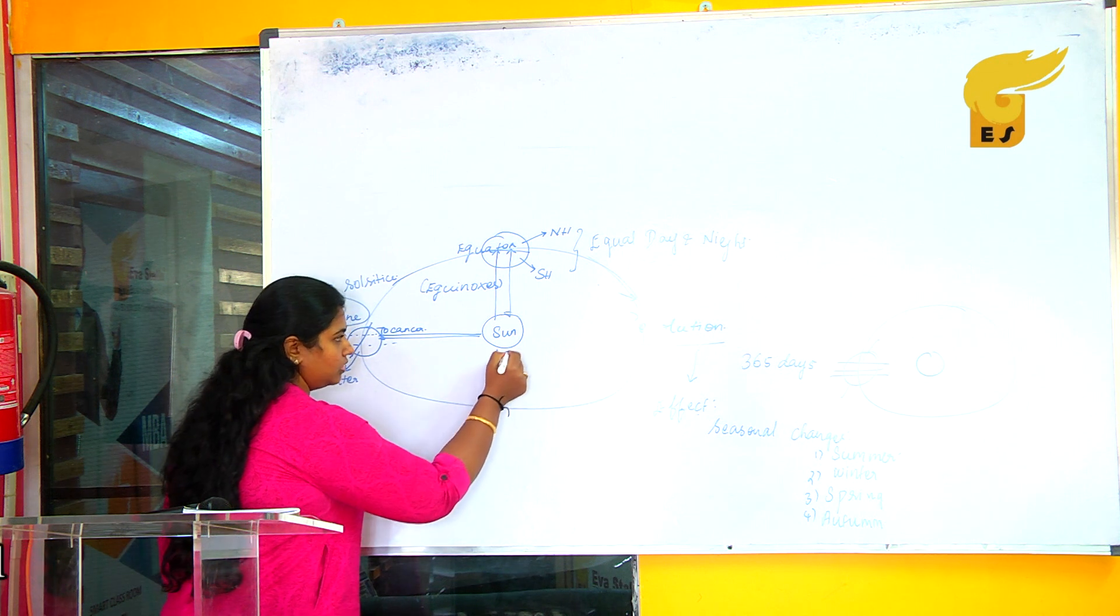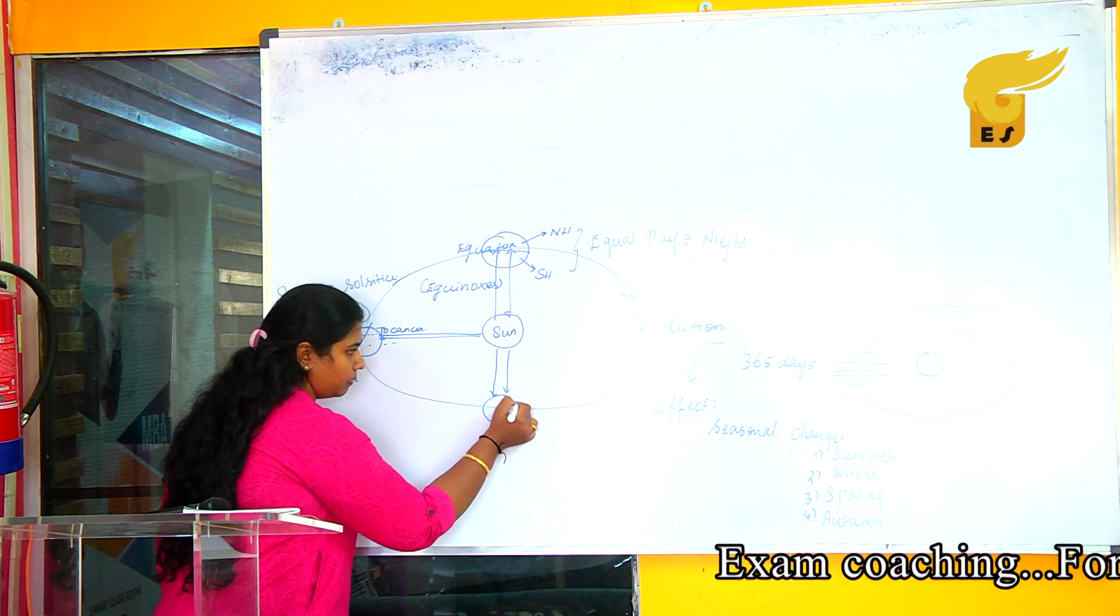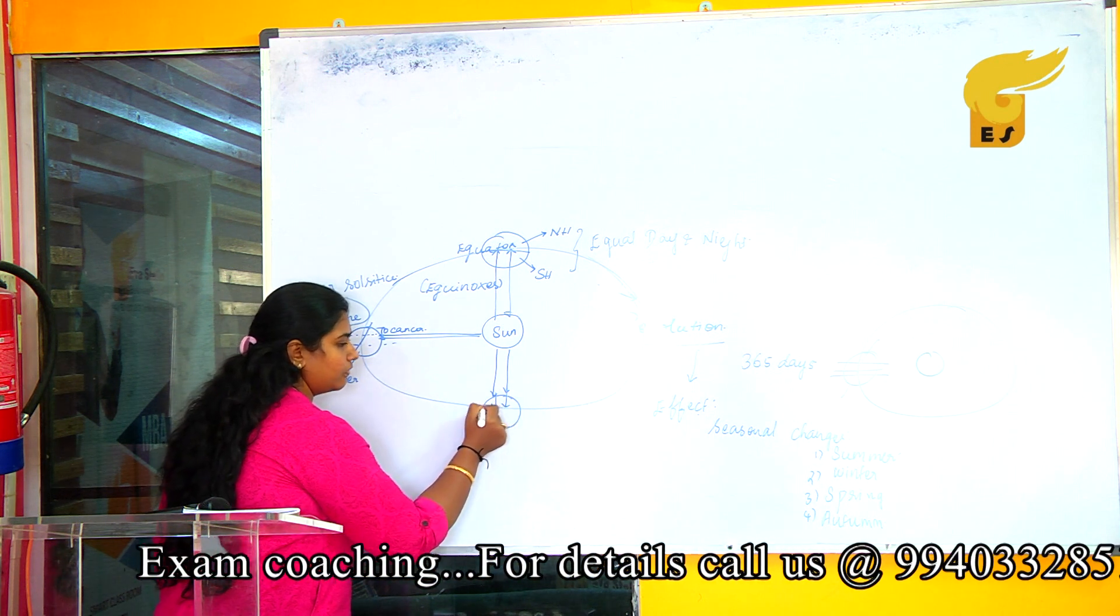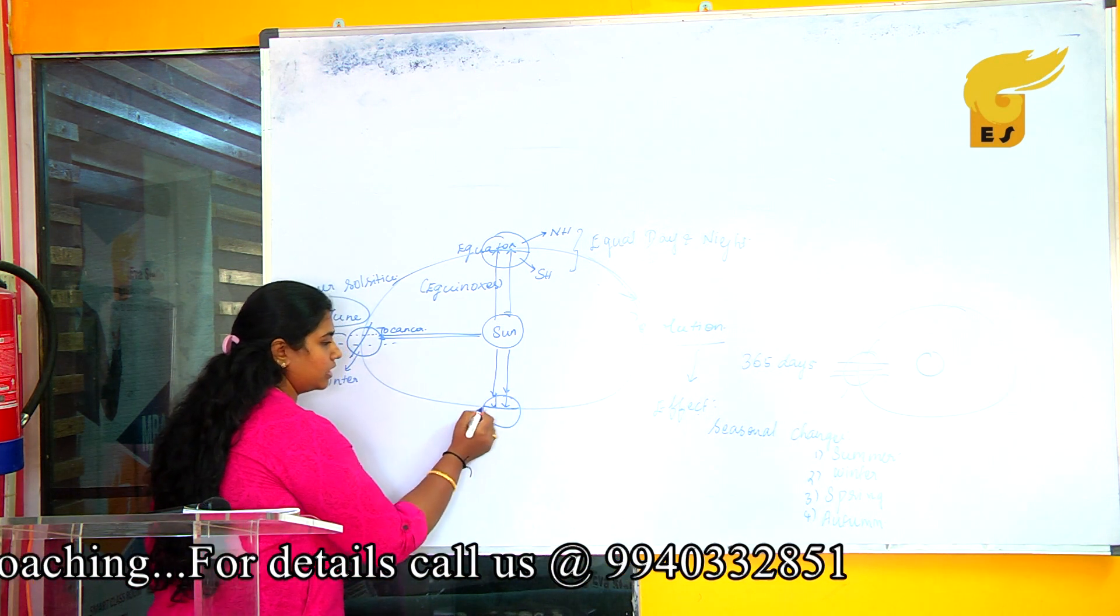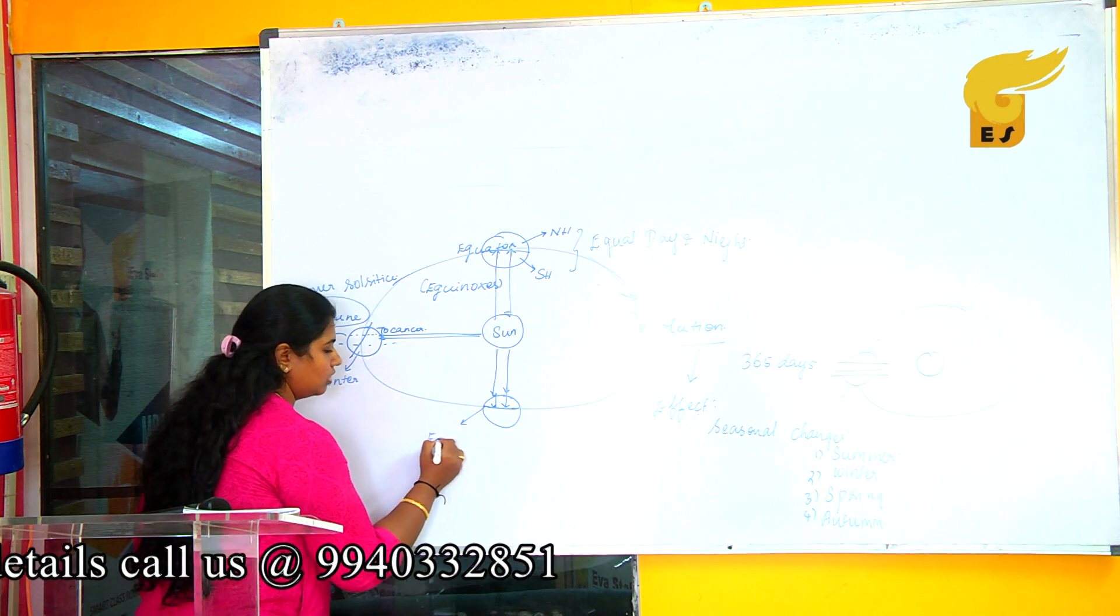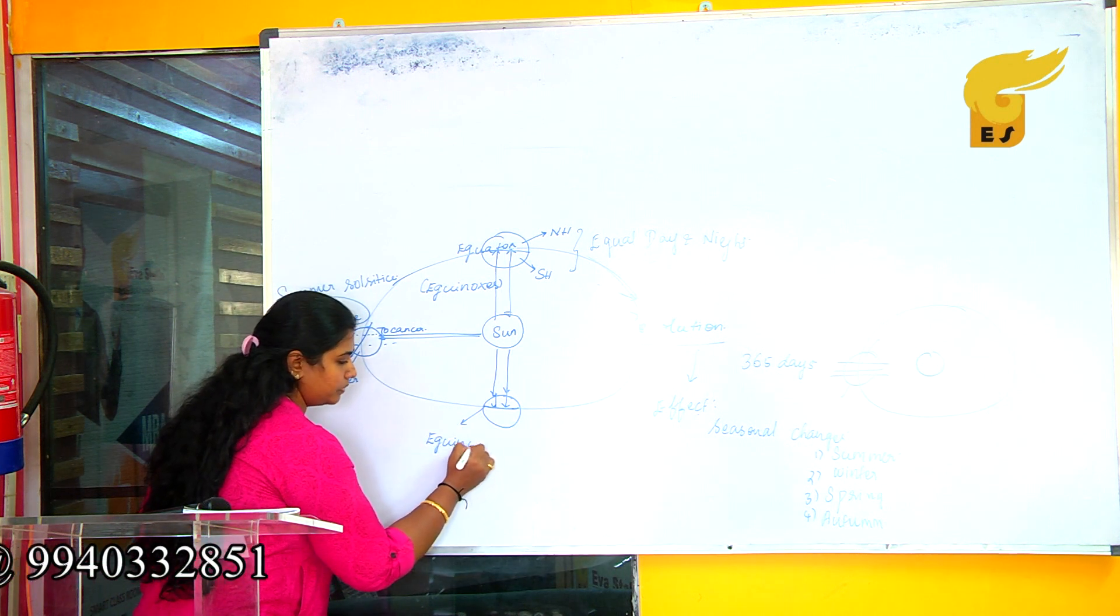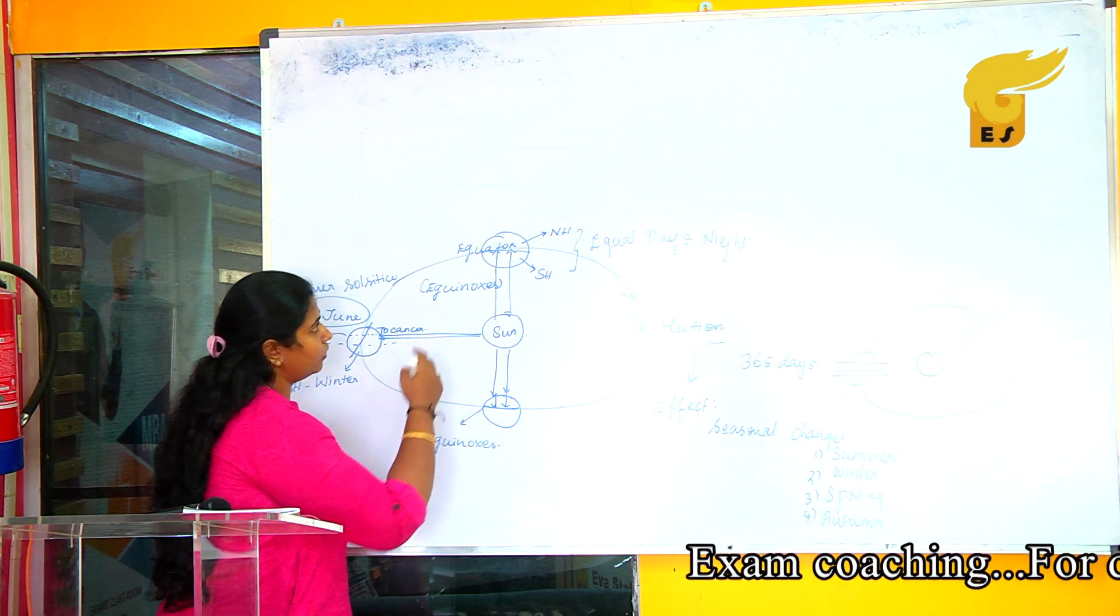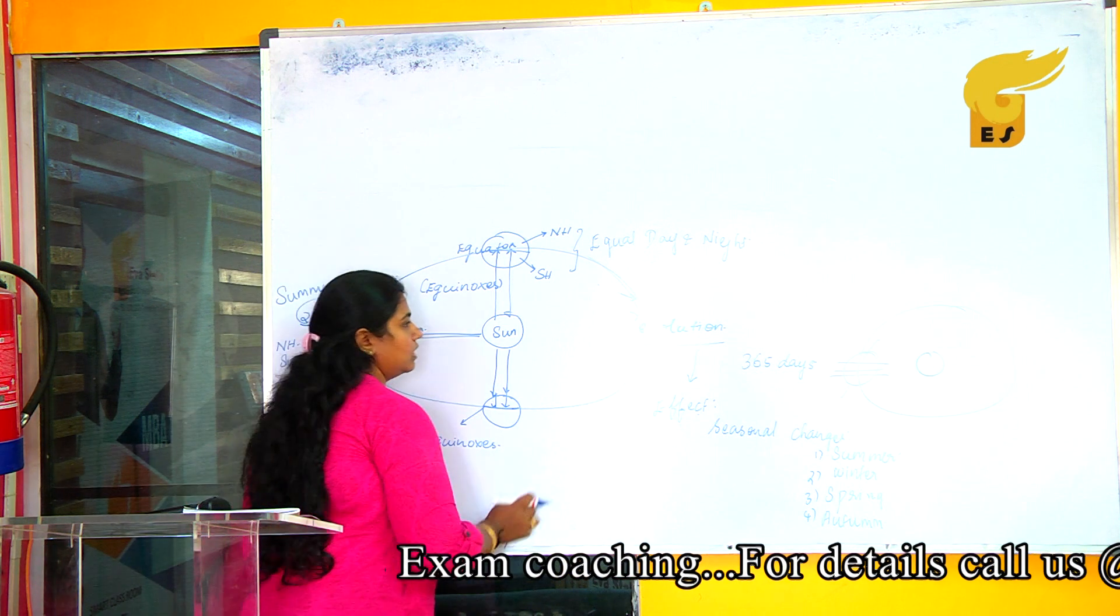Further on, when Earth is revolving, the Sun rays will again fall on the equator. A similar situation, equinoxis will happen. Again, equal day and night for both Northern and Southern Hemisphere.